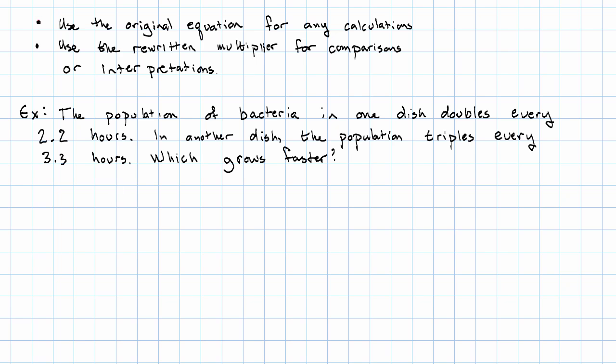Our variables are P, the population that's dependent, and T, the time, that's independent.